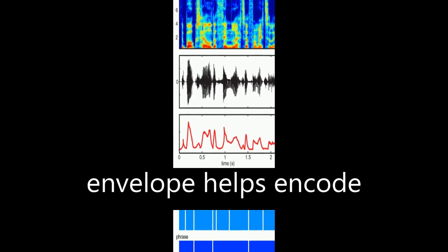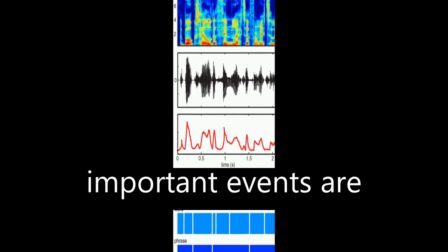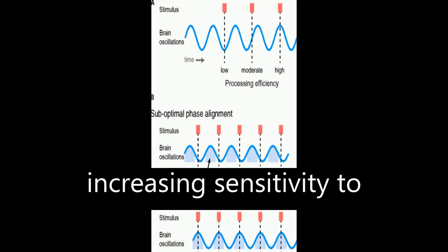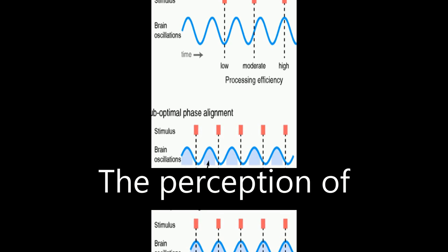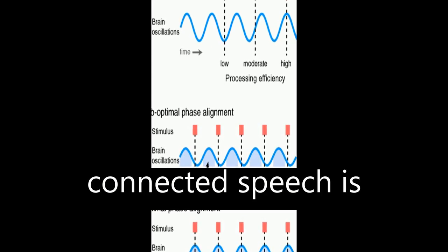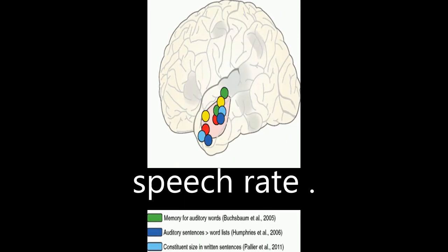in the speech envelope helps encode predictions of when important events are likely to occur, increasing sensitivity to relevant acoustic cues. The perception of phonemes and words in connected speech is influenced by preceding speech rate.